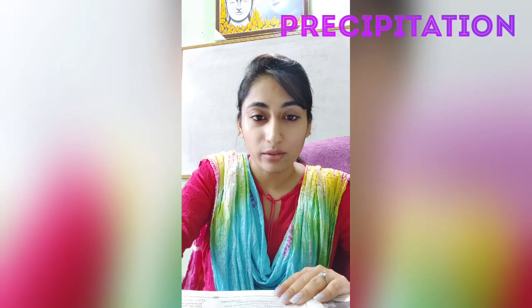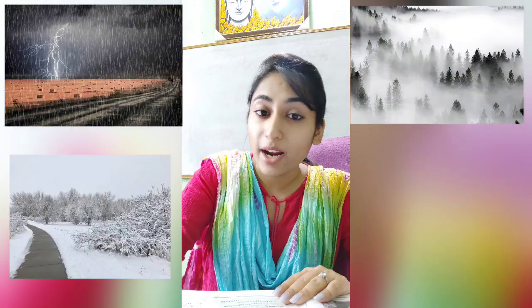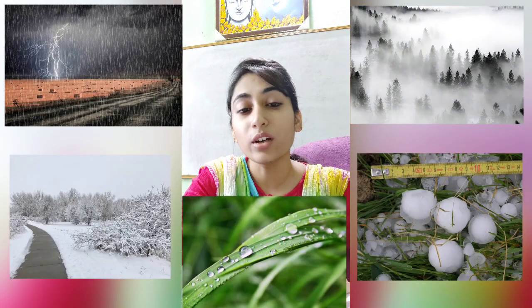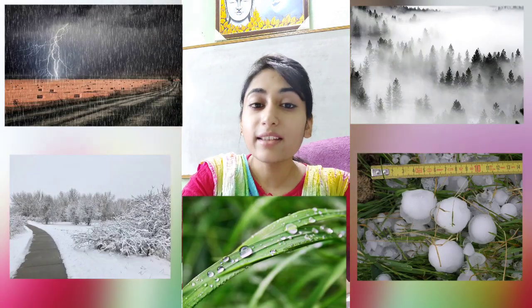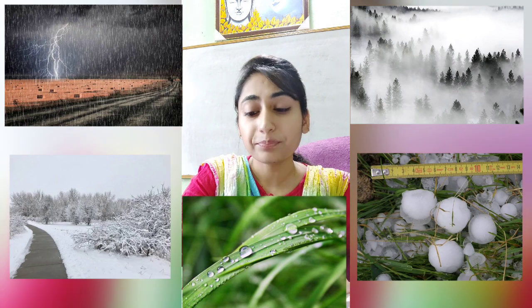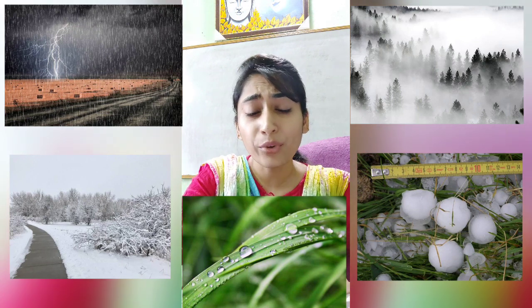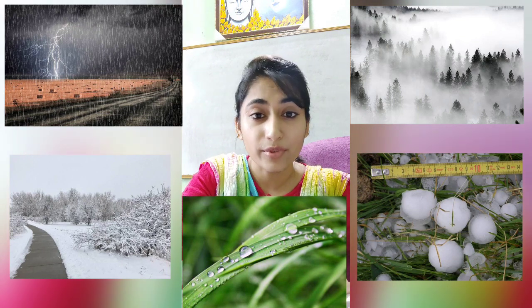What is precipitation? Precipitation is any form of water, whether it be liquid or solid, falling on the land from the sky — or more precisely, falling from the atmosphere onto the earth's crust. This is known as precipitation. Now precipitation can be of different forms.